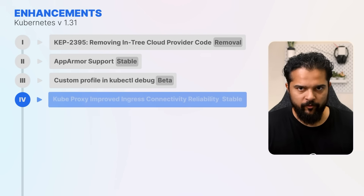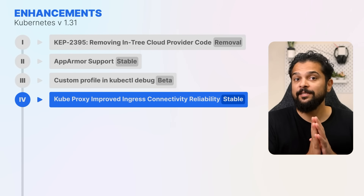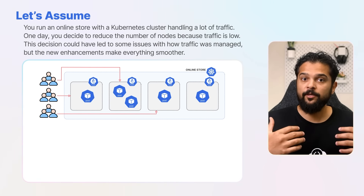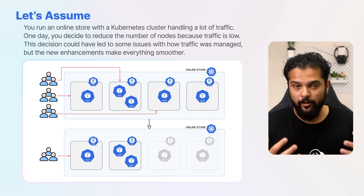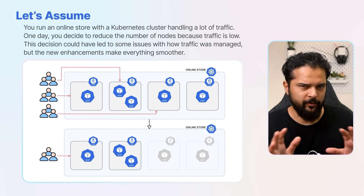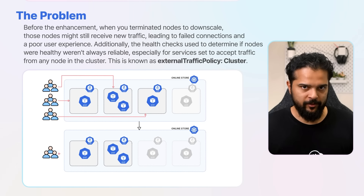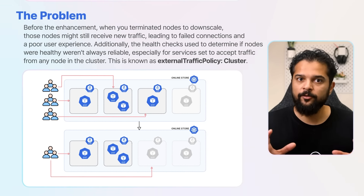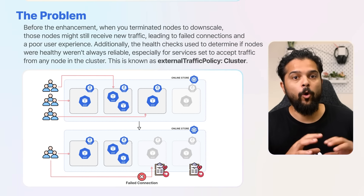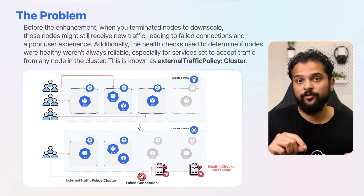Kubernetes has introduced significant improvements to the kubectl proxy ingress, enhancing connectivity reliability — and this is graduating to stable. Suppose you run an online store with a Kubernetes cluster handling a lot of traffic, and you decide to reduce the number of nodes because traffic is low. Before the enhancement, when you terminated nodes to downscale a Kubernetes cluster, those nodes might still receive new traffic, leading to failed connections and a poor user experience. Additionally, health checks used to determine if nodes were healthy weren't always reliable, especially for services set to accept traffic from any node — known as external traffic policy cluster.